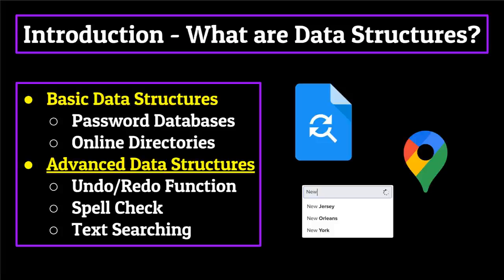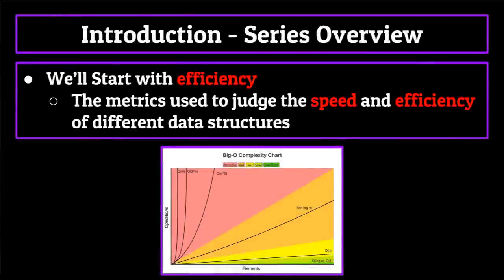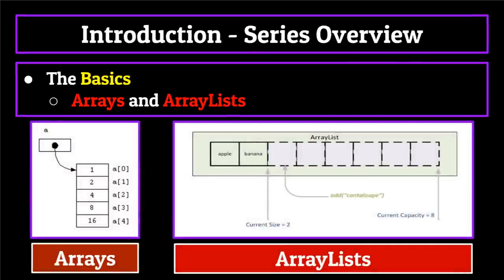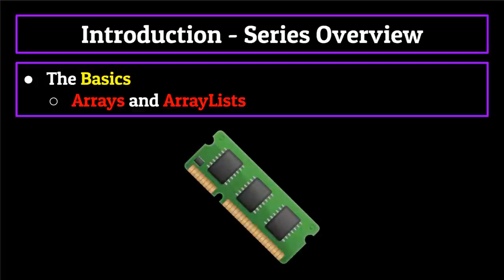Now before we jump too far into things, let's discuss the information that we'll be covering in this series. Before we talk about any specific data structures, we're going to have a brief talk about efficiency. We'll discuss the metrics used to judge the speed and efficiency of different data structures, which will give you a better understanding of why one data structure might be used over another. From there, we'll start by diving headfirst into what I believe are the basic data structures — those being arrays and array lists. While you may already have a good understanding of what these are, I would highly suggest that you still watch these segments, because we'll be going into a little bit more depth as to why they're so useful, based on differences in how they're stored in the computer's memory.